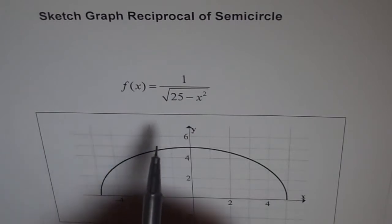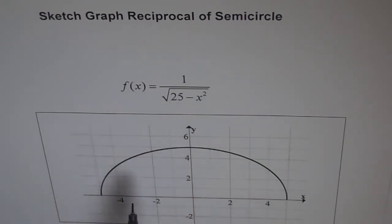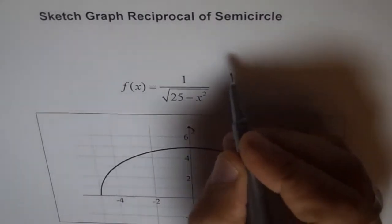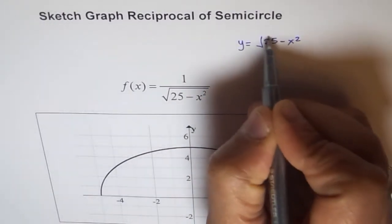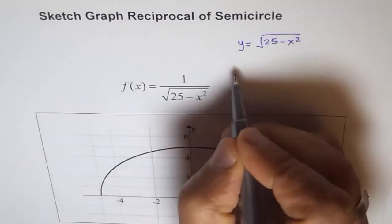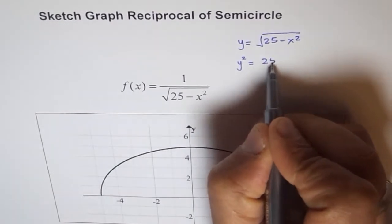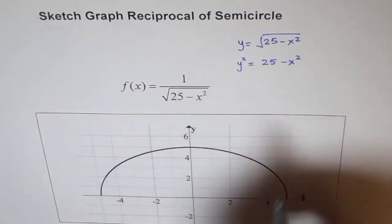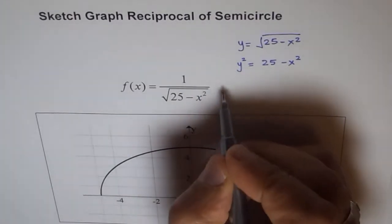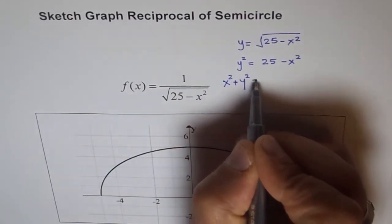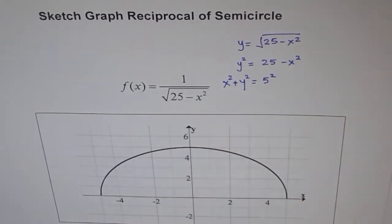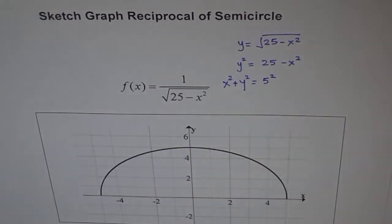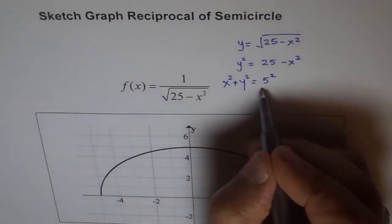Let's go backwards and see what this function is. So let's say y equals square root of 25 minus x square. Now if we square both sides, we get y square equals 25 minus x square. Now if I bring x square on this side, I get x square plus y square equals 25. I am purposely writing 25 as 5 square. Now does that remind you of anything?